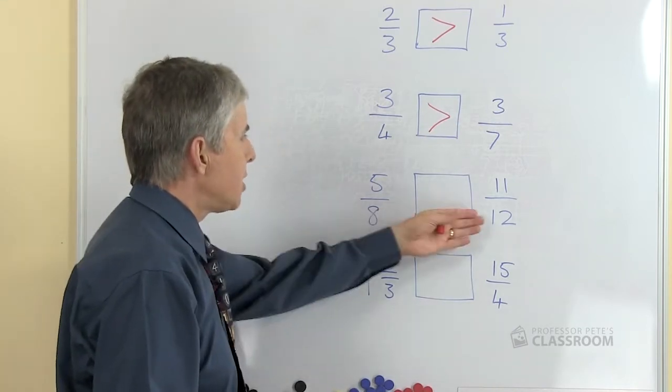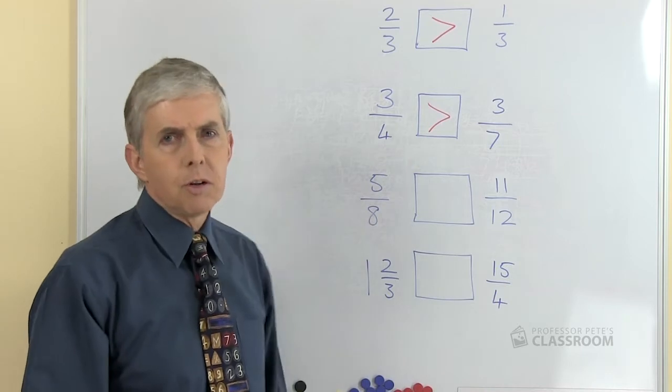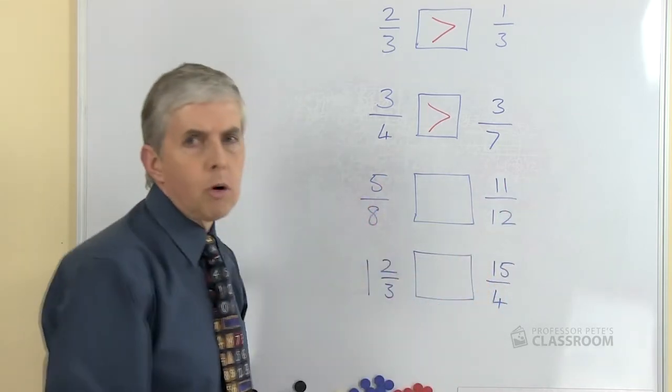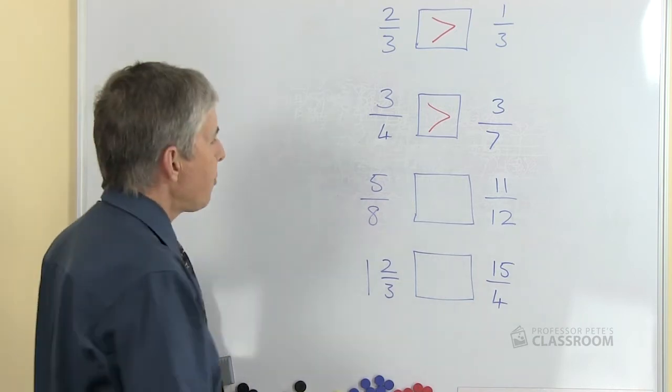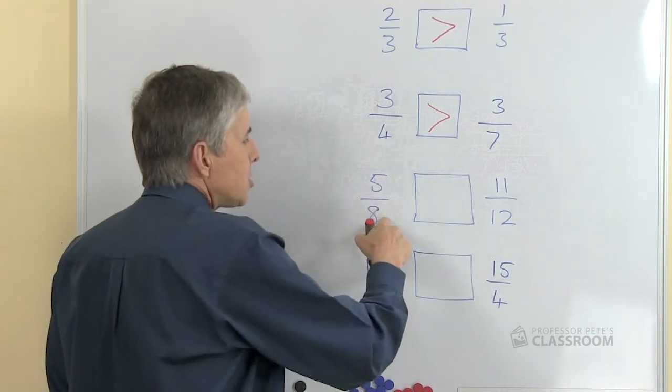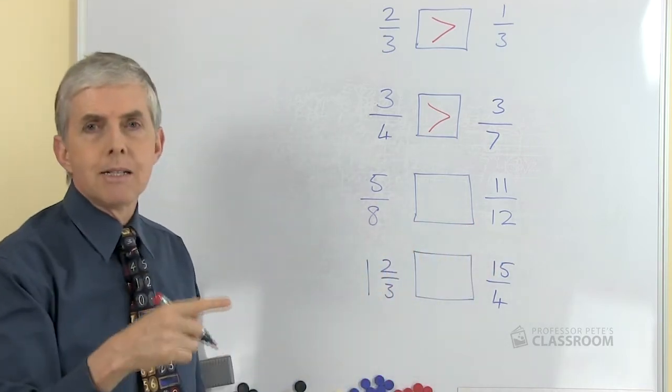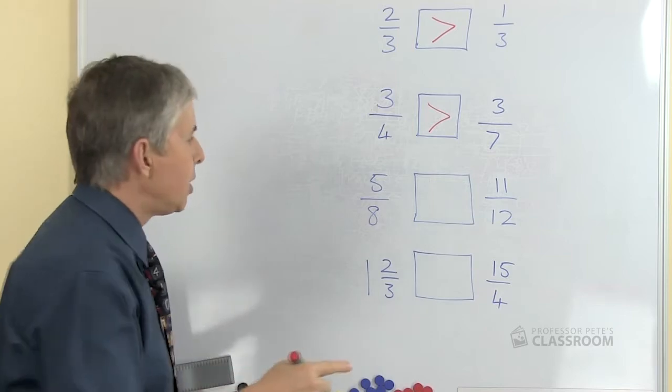Let's look at the next one, five-eighths and eleven-twelfths. This is more difficult, the denominators are different, the numerators are different. What are we going to do? The most simple straightforward method is to convert both of them into some fraction where the denominators are the same and then we can compare them.